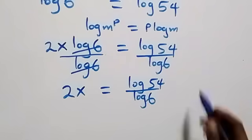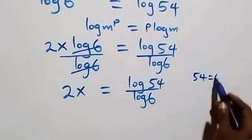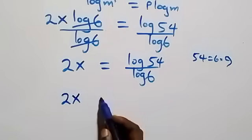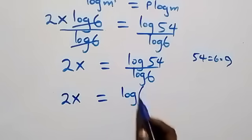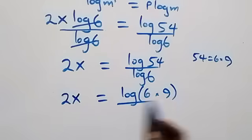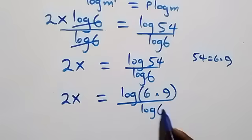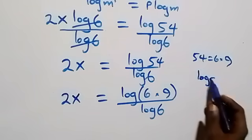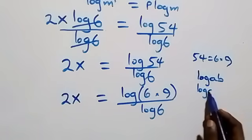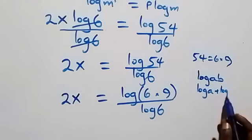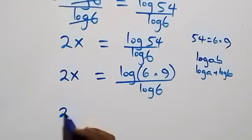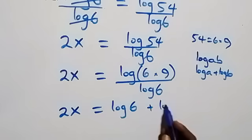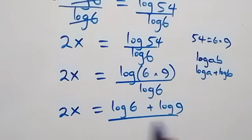From here we can express 54 as 6 times 9. What we have becomes 2x equals log(6 times 9) over log 6. This follows from the law of logarithm — when we have log(a times b), it can be written as log a plus log b. So we have 2x equals log 6 plus log 9, all over log 6.